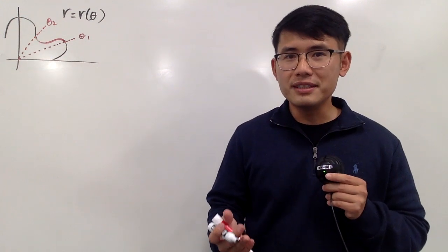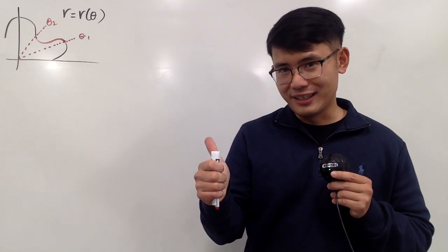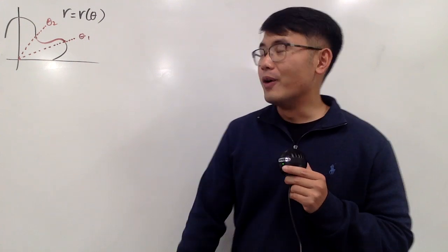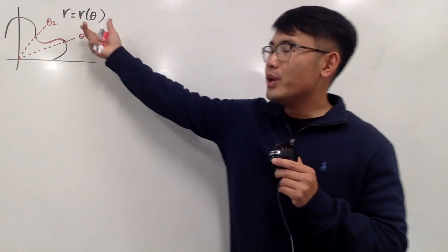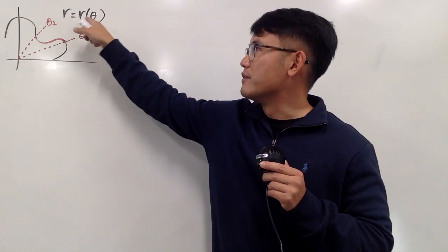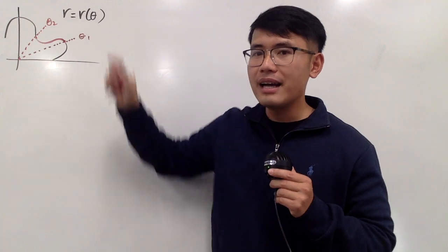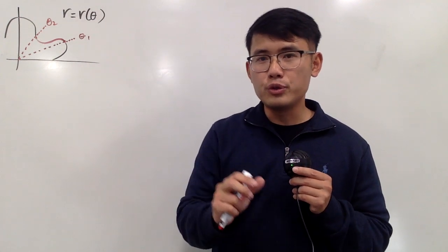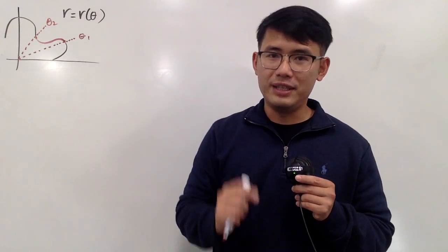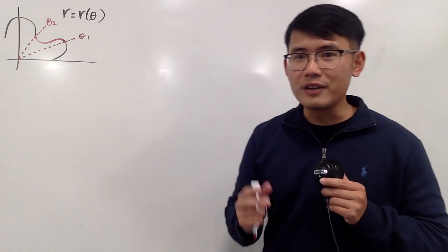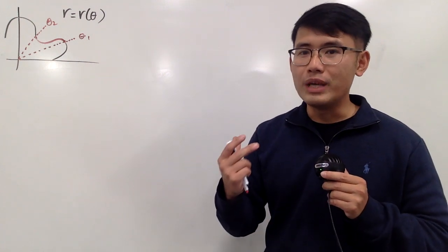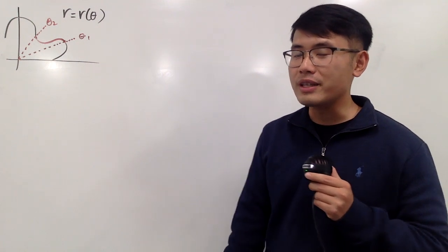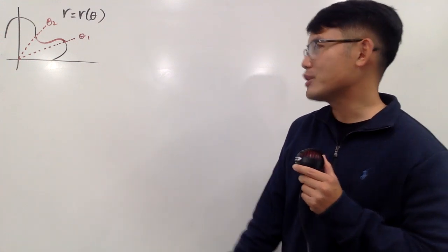The key idea here is that we are given a polar equation where R is a function of theta, and we can actually go from a polar equation to a parametric equation very easily. Because we know how to find arc length when we have parametric equations, we will convert to the parametric equation and work from there.